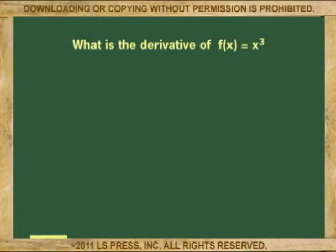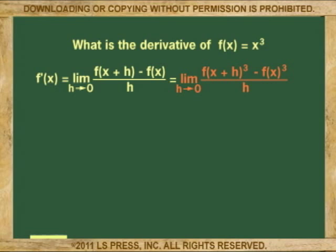Okay, now let's try this example. What is the derivative of the function x cubed? Using this new found equation gives us the limit as h approaches zero. We place the function into the equation like this: x plus h cubed minus x cubed over h.